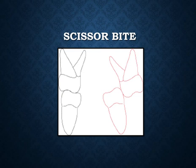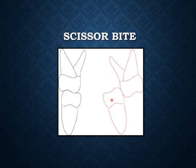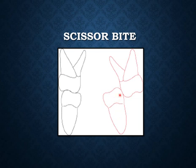Scissor bite occurs when several adjacent posterior teeth overlap vertically in habitual occlusion with their antagonists without contact of their occlusal surfaces. The deviation of the affected teeth can occur in either the maxillary buccal or mandibular lingual direction, where mandibular dentition is completely contained within the maxillary dentition in habitual occlusion. The lower teeth occlude more lingually to the upper posterior teeth — hence the term scissor bite.